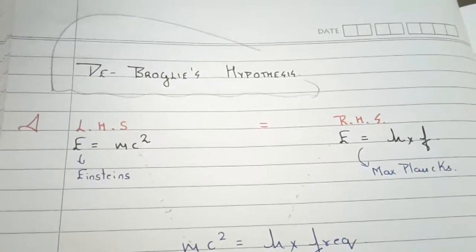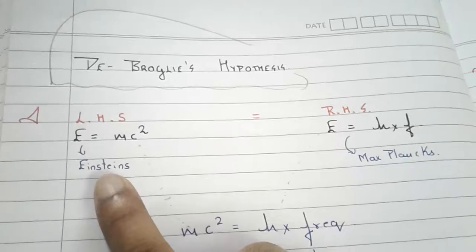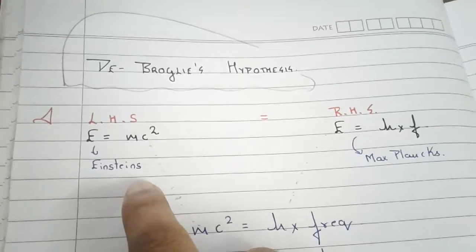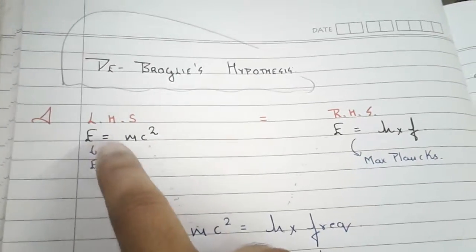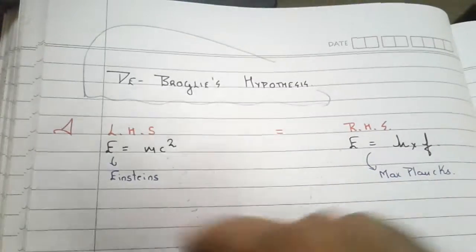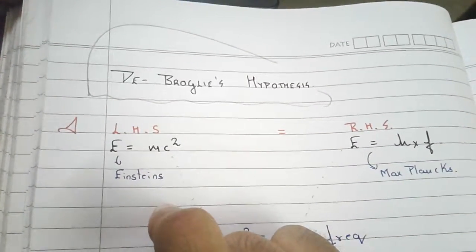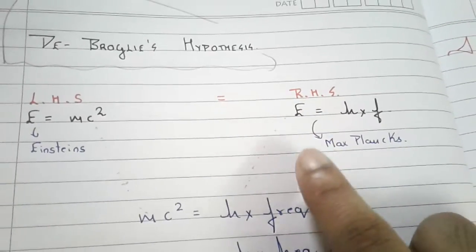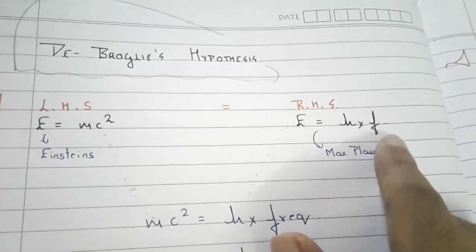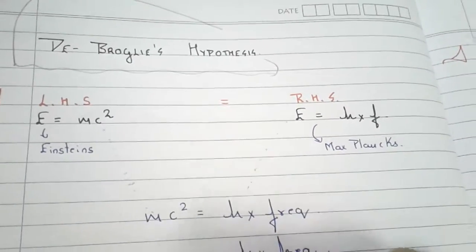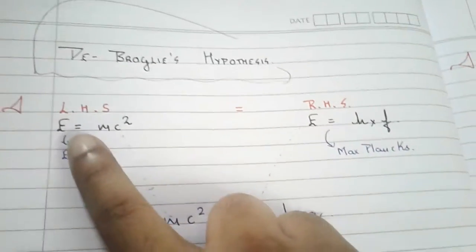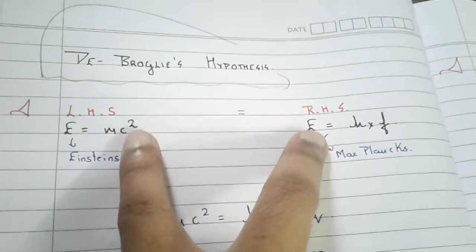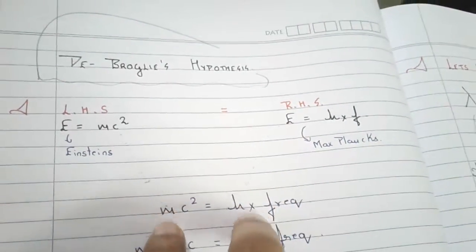The first equation he used was Einstein's equation. He took Einstein's equation on the LHS: E equals mc squared — energy equals mass times c squared. And on the RHS, he took another equation for energy which said energy equals h times frequency. This is Planck's equation. Now both these expressions represent energy, so he decided to combine them.